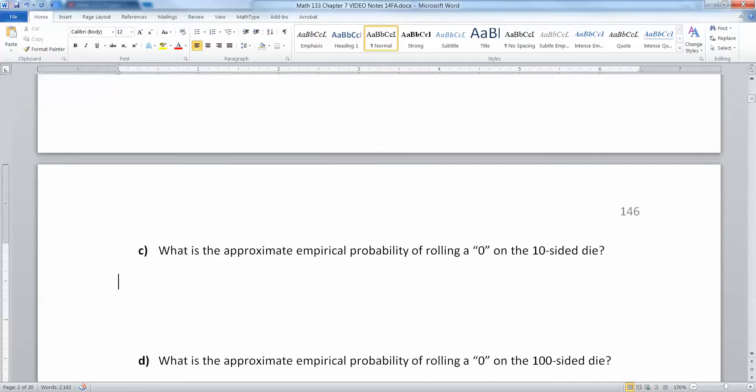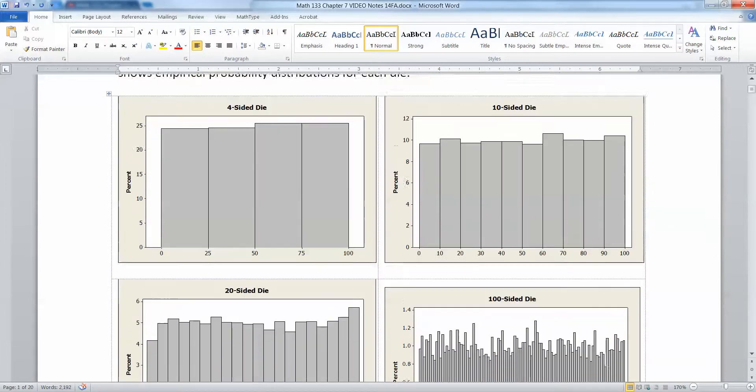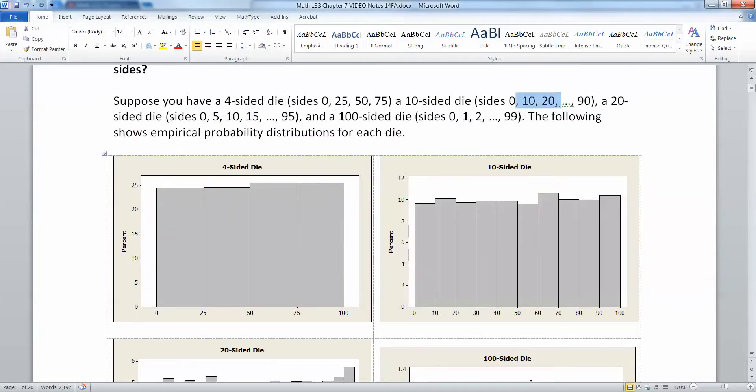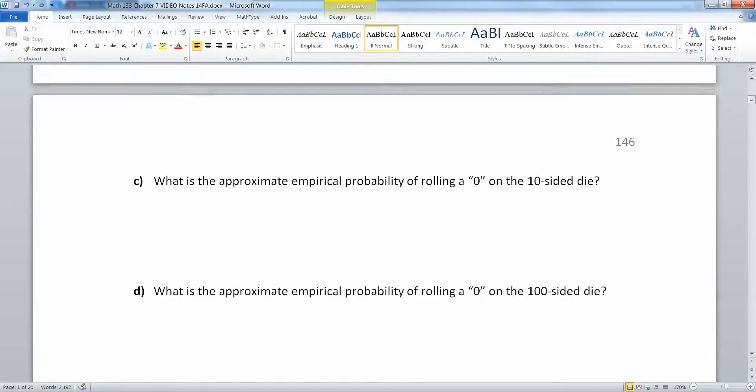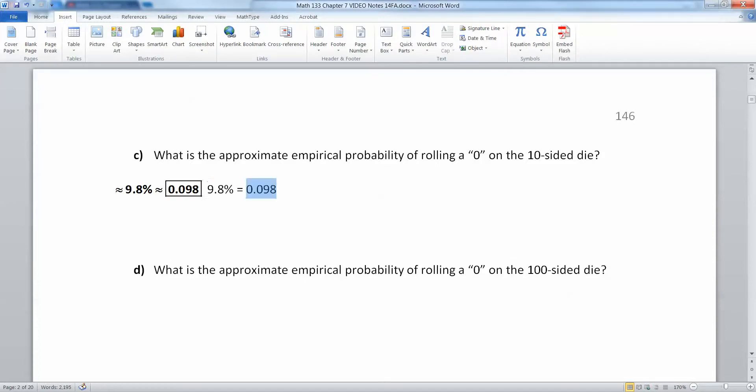What is the approximate empirical probability of rolling a 0 on the 10-sided die? Let's go back here and look at the 10-sided die. We have the sides 0, 10, 20, and so on. The 0 is right here on that first bar, right below the 10%. So that's about 9.7, 9.8%. I'll make it 9.8%, which would be 0.098.